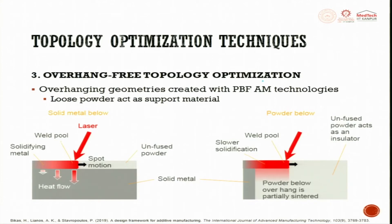In overhang-free topology optimization for powder bed fusion, the overhanging geometry shows solidified metal, laser hit point, weld pool, spot moving direction, unfused powder, and heat flow on solid metal. The powder below the overhang is partially sintered so it can be easily broken. Slower solidification occurs at the weld pool front, while unfused powder acts as an insulator. With minimum support, overhang structures can be achieved.